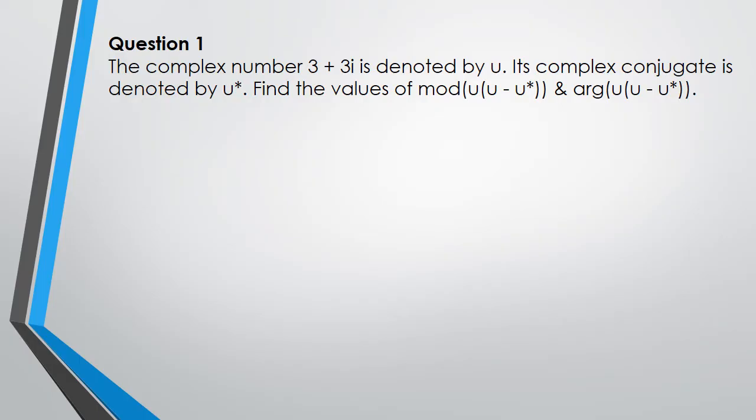Okay, so let's do the first question. With the first question you've been given the complex number 3 plus 3i and that's denoted by u, and then you've got the conjugate of it is u star. So the first thing I want to do is I'm going to put down u equals 3 plus 3i and then conjugate of u is 3 minus 3i.